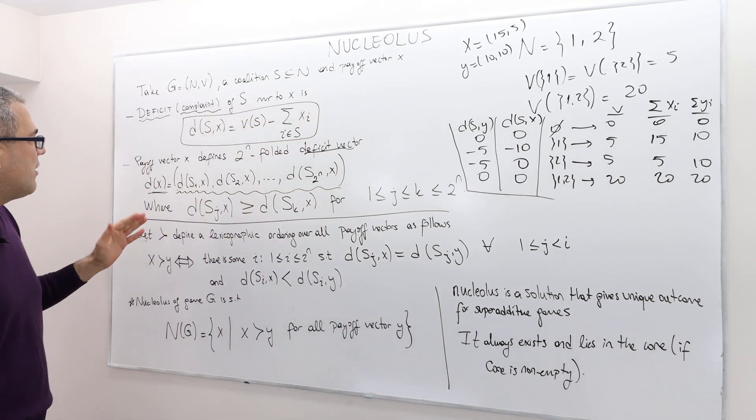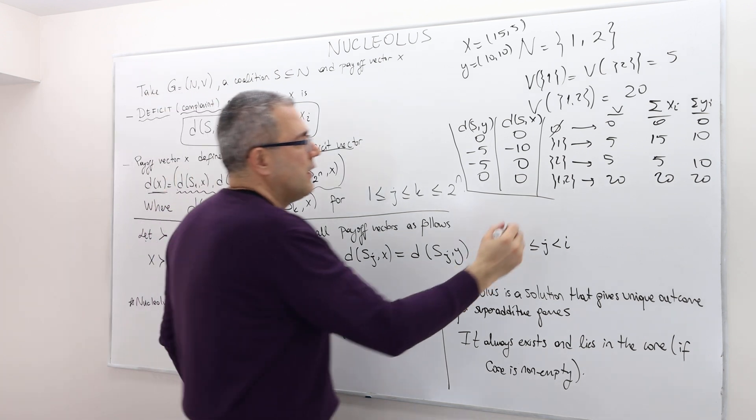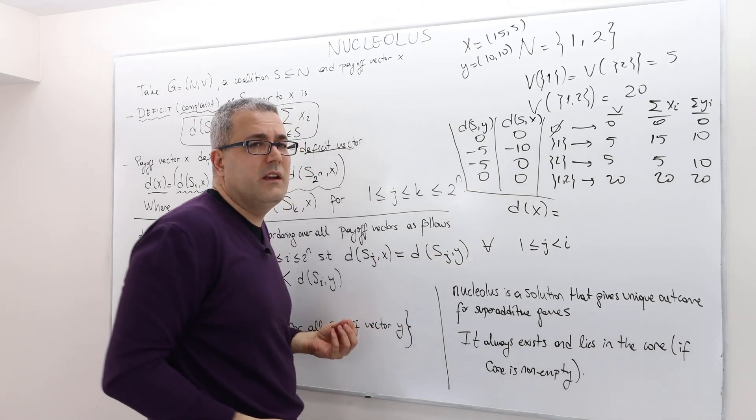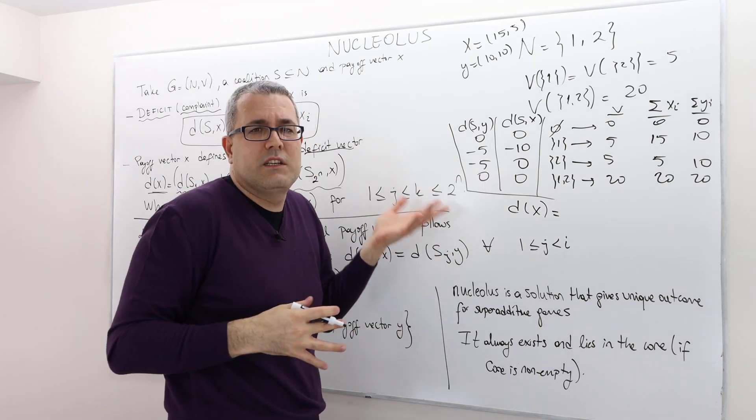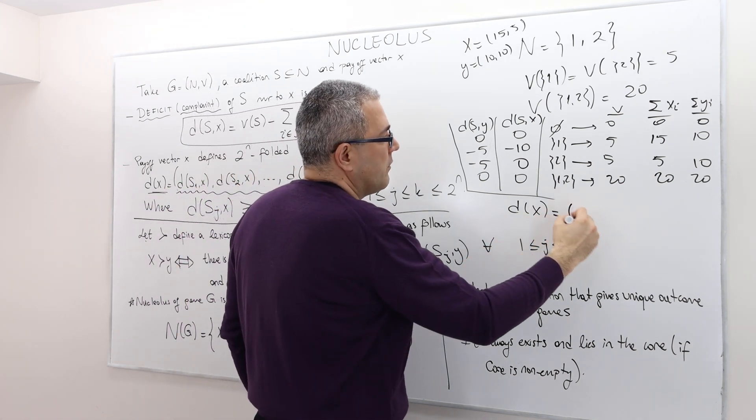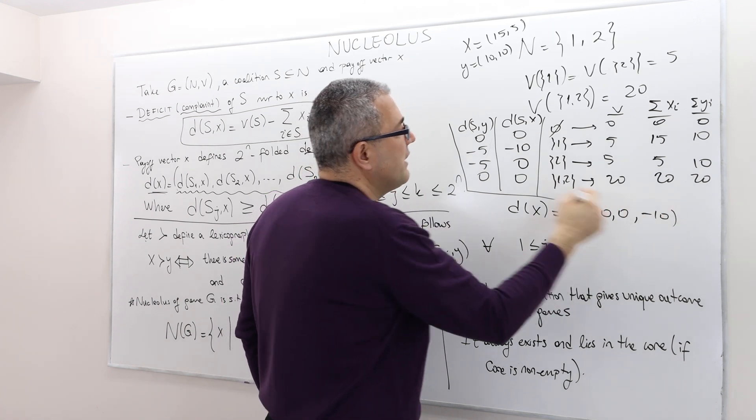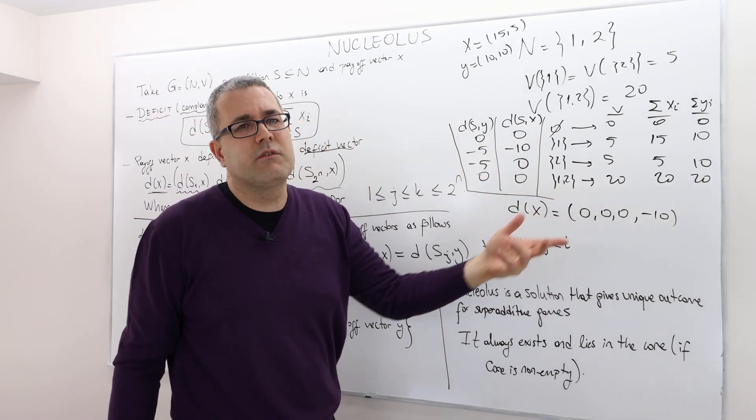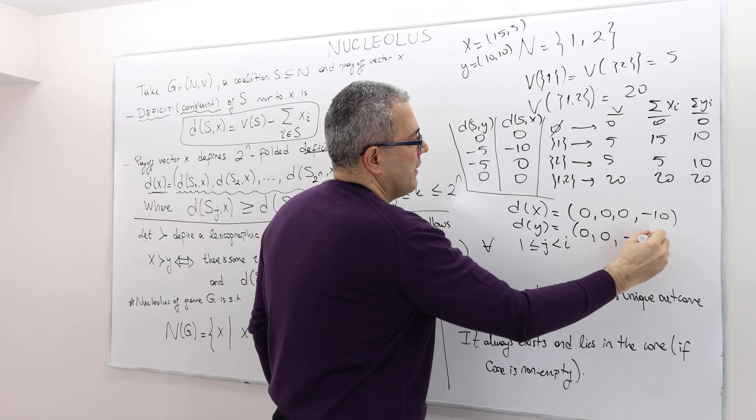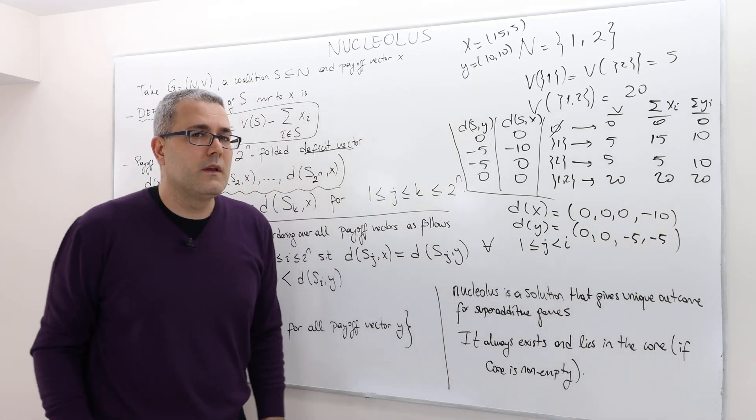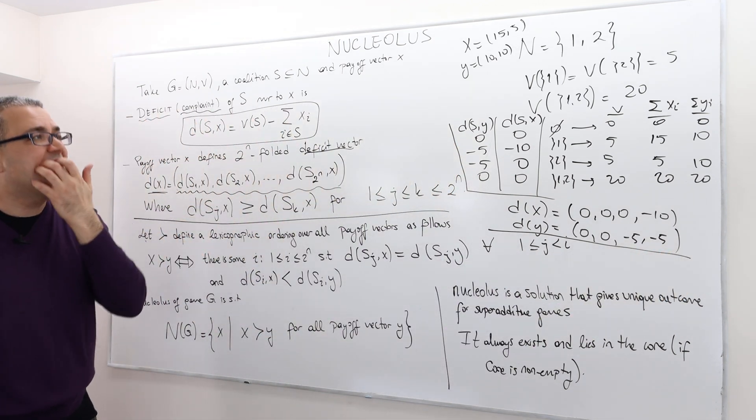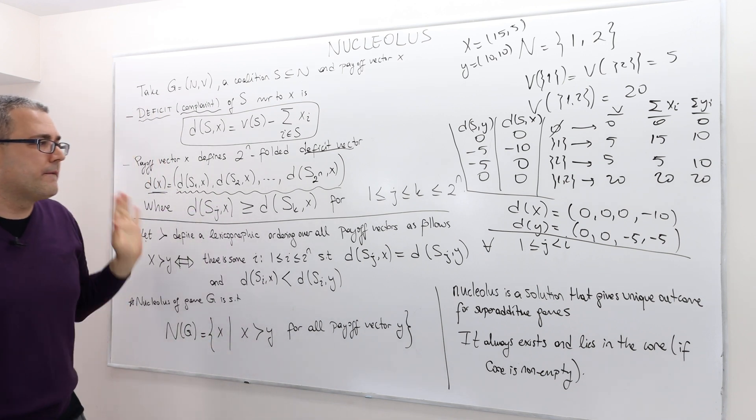So now I am going to create d of x. d of x is basically the highest complaint. Here the complaints are either 0 or negative. So there's no real complaint. So it's 0, 0, 0, minus 10. And then d of y is what? 0, 0, 0, minus 5, minus 5. So that's it. This is how we create those deficit vectors, given the payoff vectors x and y.